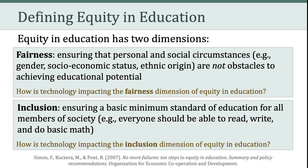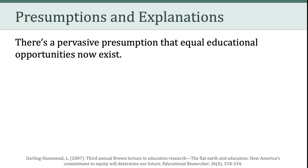However, there is a 91-point gap in science performance between students attending advantaged schools and those attending disadvantaged schools. So again, we're seeing within the U.S., when we focus on different subgroups, we have differing educational outcomes. And if we connect that back to the fairness dimension of equity, recall that fairness means ensuring that personal and social circumstances are not obstacles to achieving educational potential. And when it comes to the inclusion dimension, that means ensuring that everyone has a basic minimum standard of education.